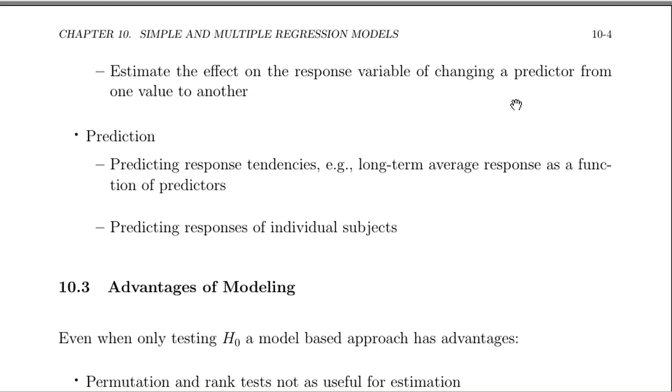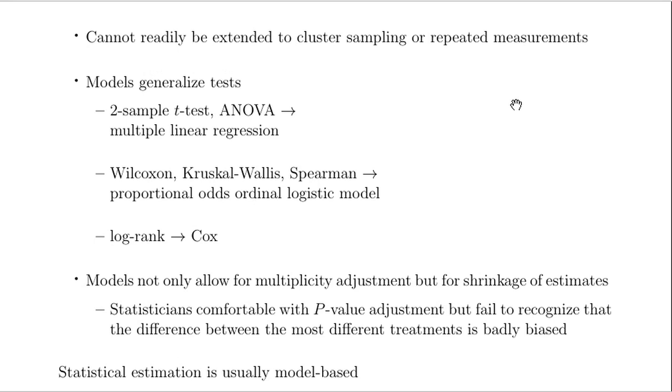Now, modeling has a lot of advantages over hypothesis testing. Even when you have a null hypothesis you want to test, alternatives to modeling have some disadvantages. Permutation and rank tests can perform very well and be very robust, but they're not as useful for estimation as statistical modeling is. And you cannot readily extend permutation tests and some nonparametric tests to complex situations, such as cluster sampling or repeated measurements.